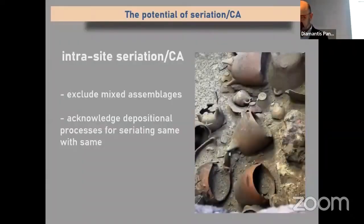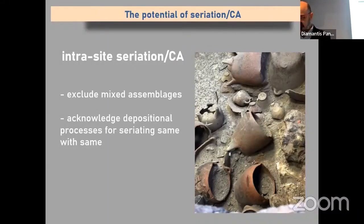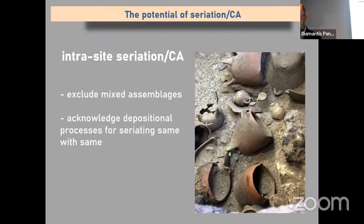Within a single site, we can exploit the full potential of seriation and minimize methodological risks, provided we carefully select appropriate units by excluding mixed assemblages and acknowledging depositional processes. A site full of floor deposits with a high percentage of complete vases is the ideal case. But if seriation can be used only at the micro level, we gain a valuable complementary method to traditional stratigraphy, but would still lack a comprehensive solution for a new system of Minoan relative chronology.